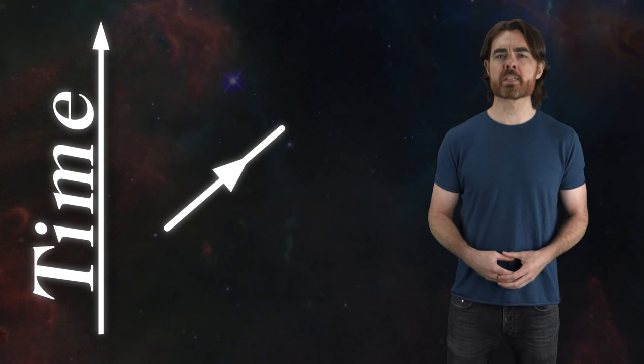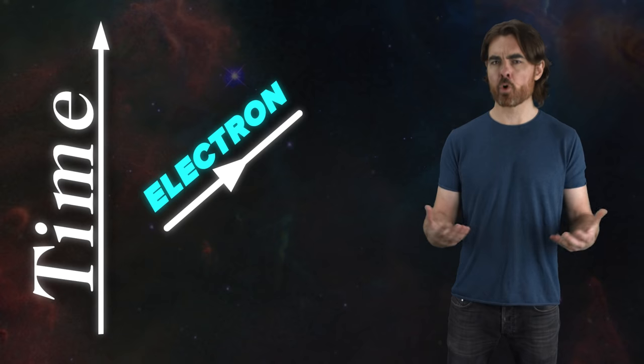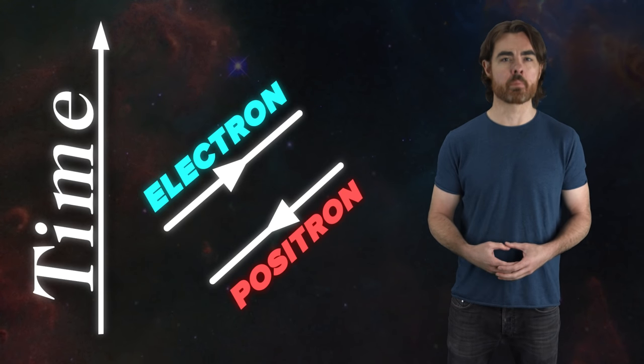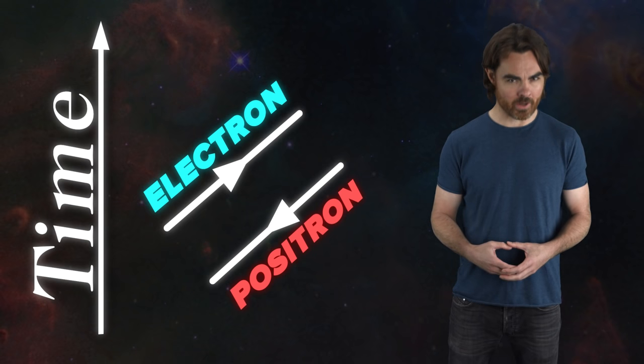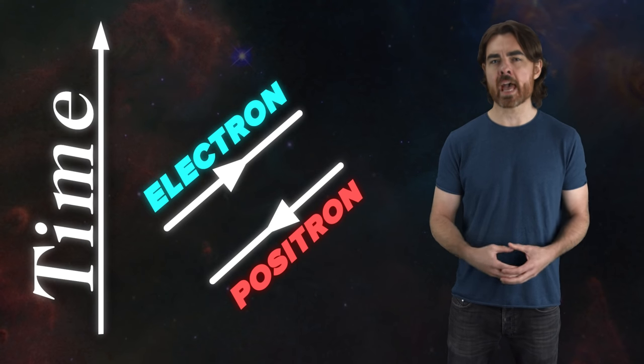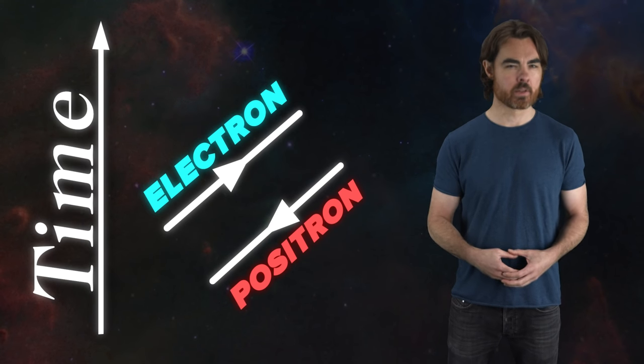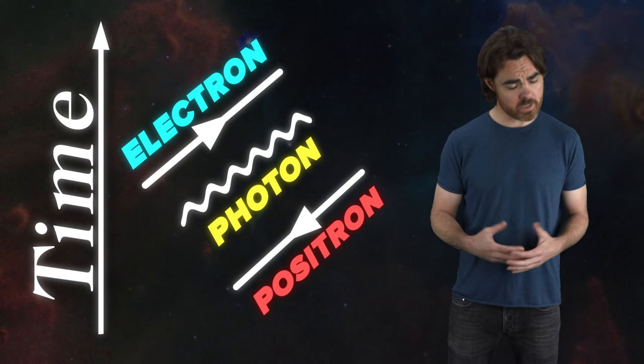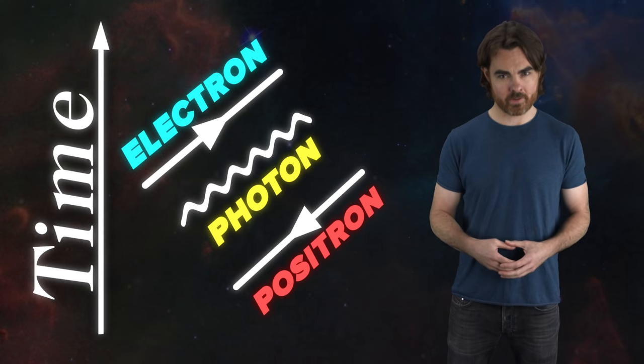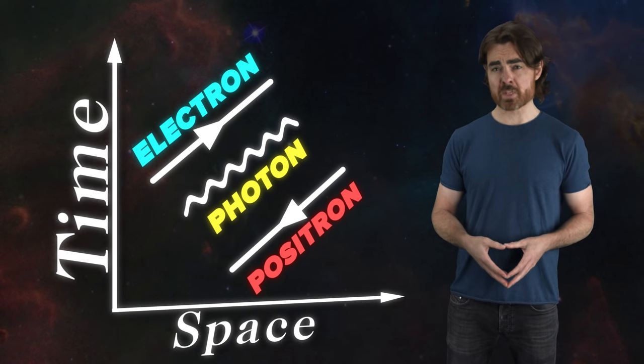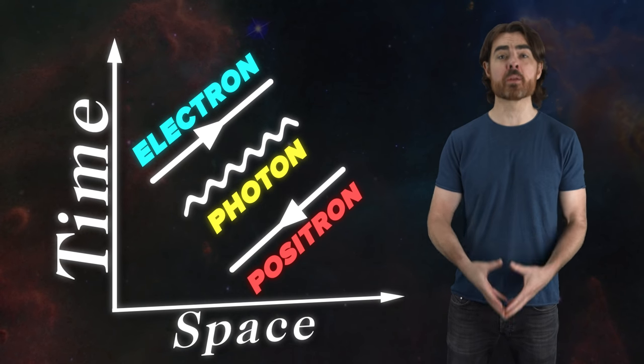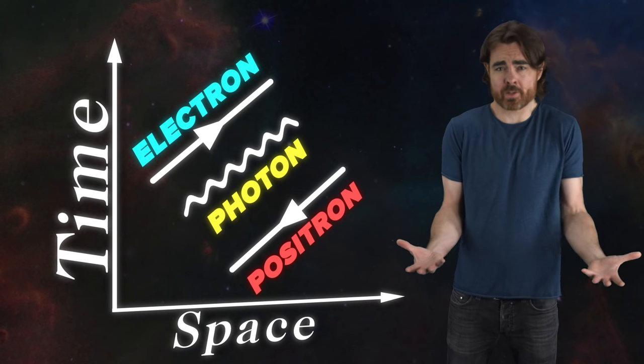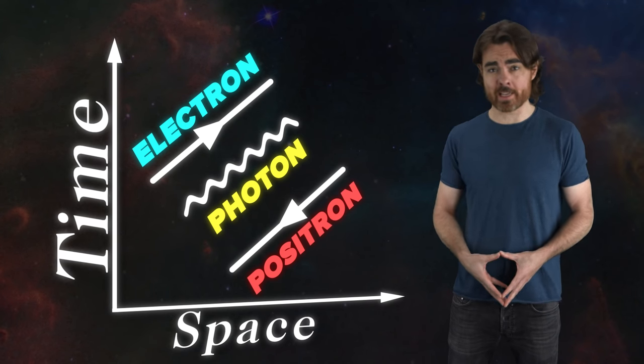In Feynman diagrams, we depict the electron as an arrow pointing forwards in time, while the positron is an arrow pointing backwards in time. We'll soon see the power of representing antimatter as time-reversed matter. The photon is shown as a wavy line. Time direction is irrelevant for the photon. Throw these on a plot of space versus time, and we have a Feynman diagram, a useless one.